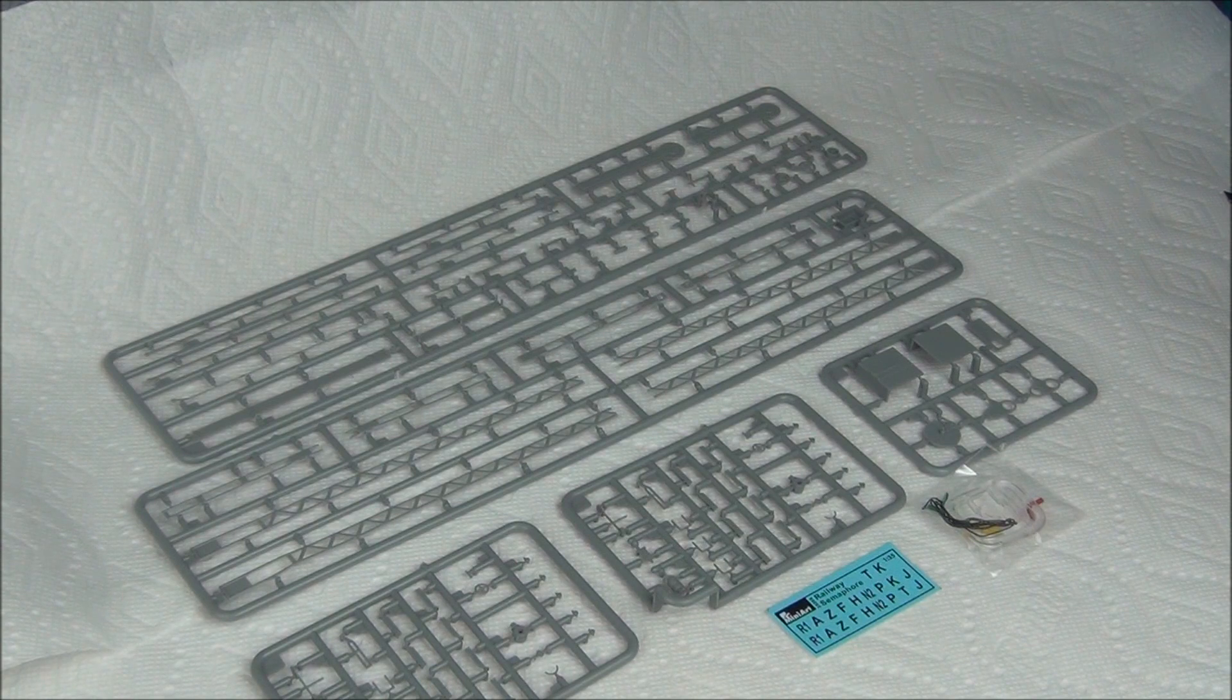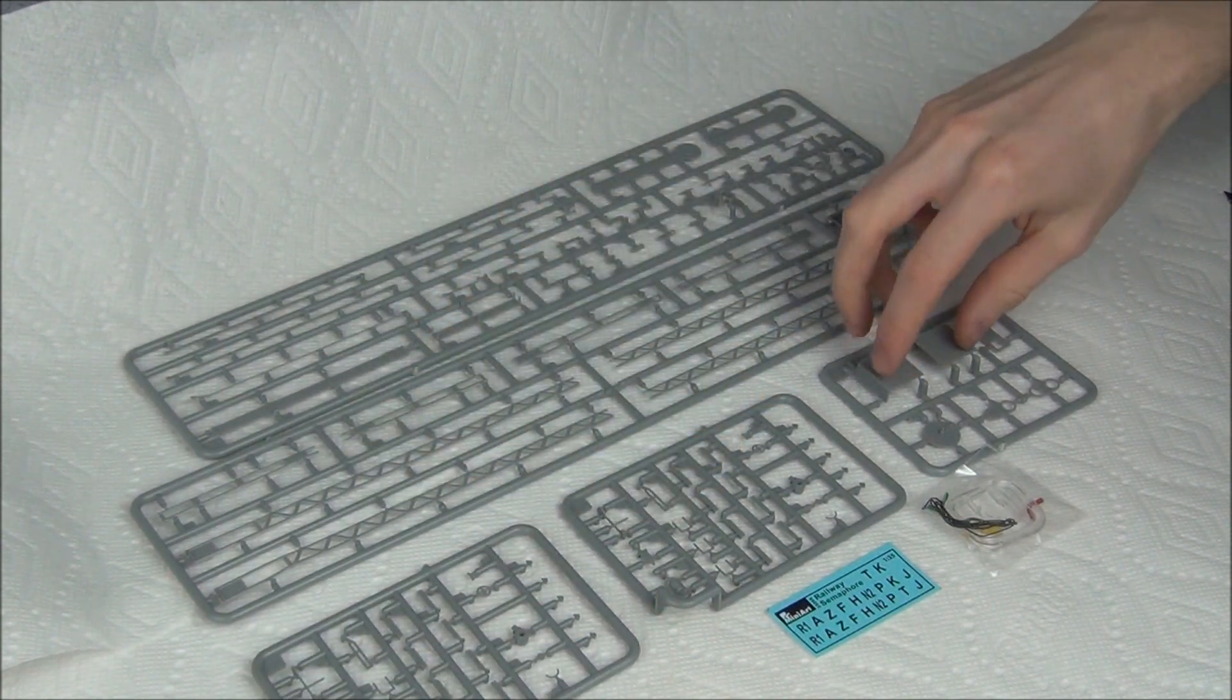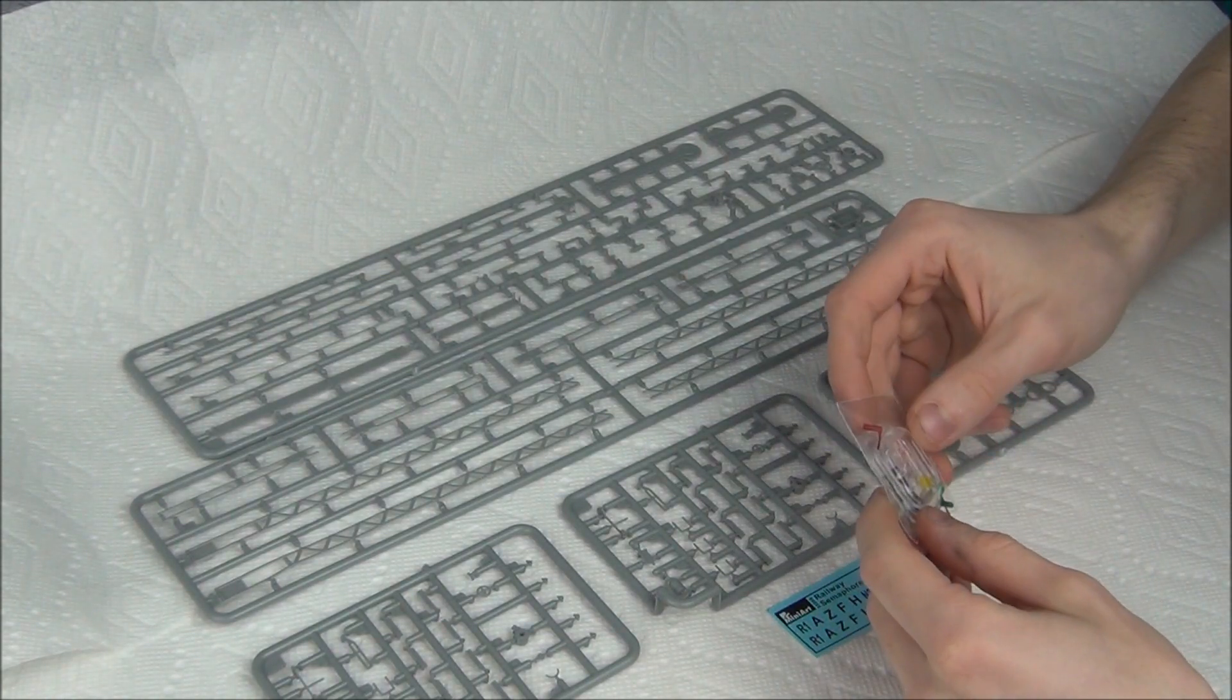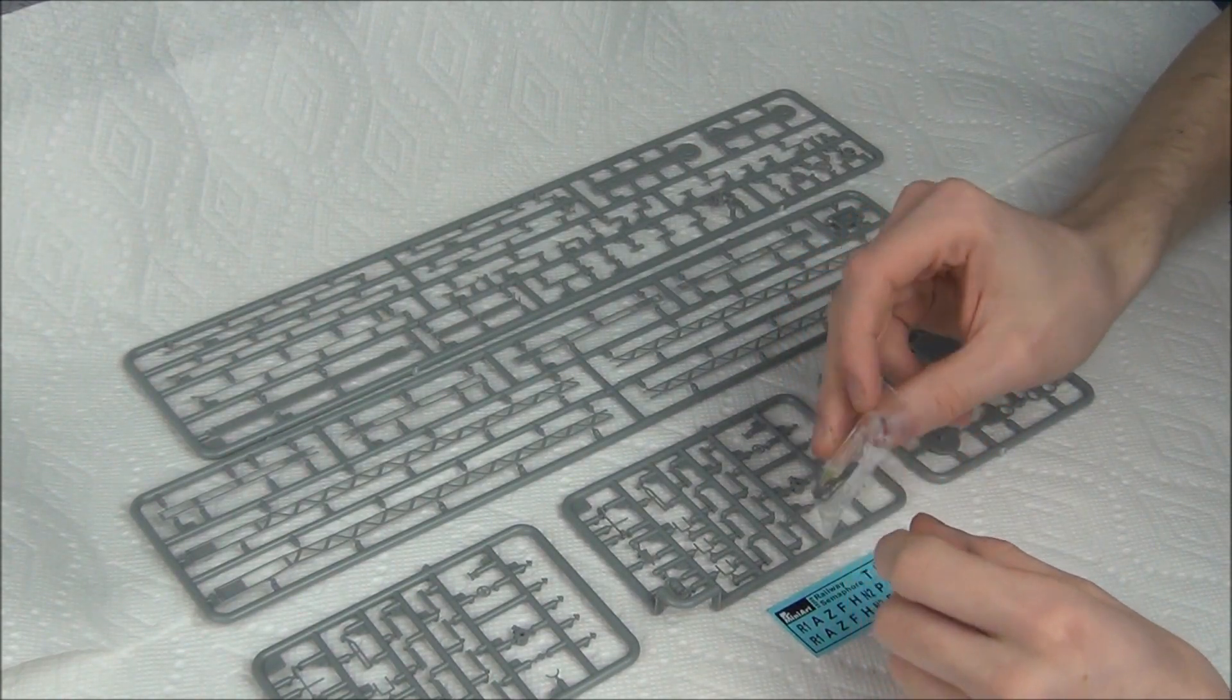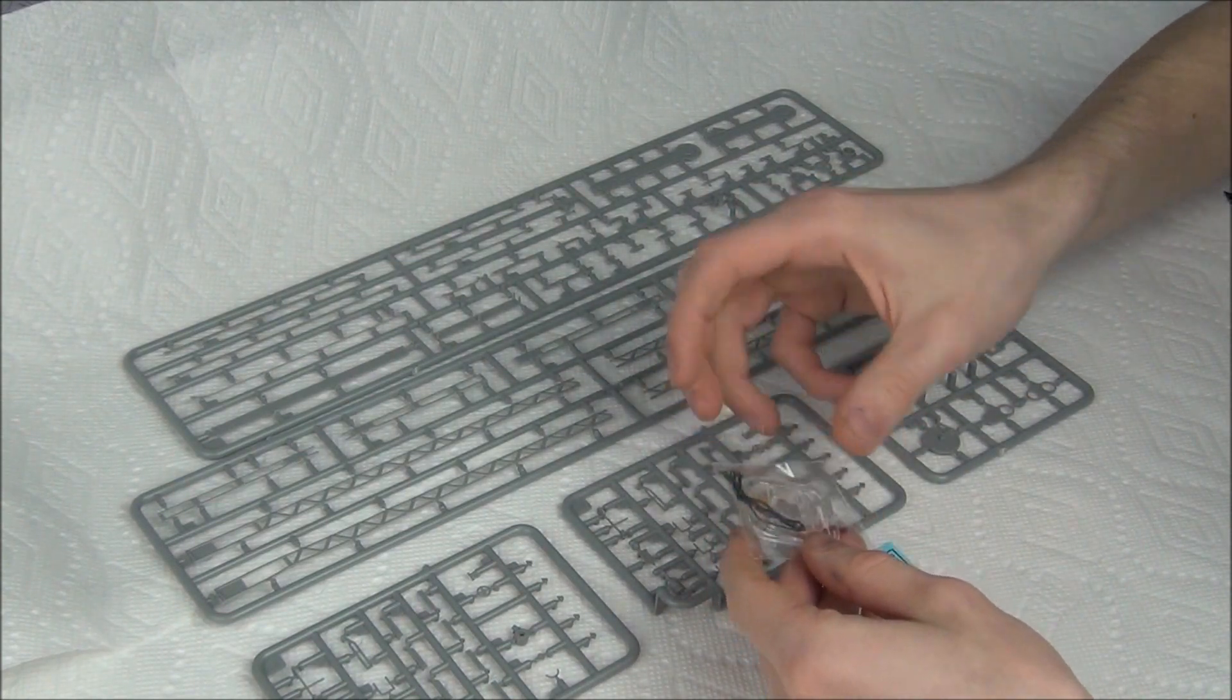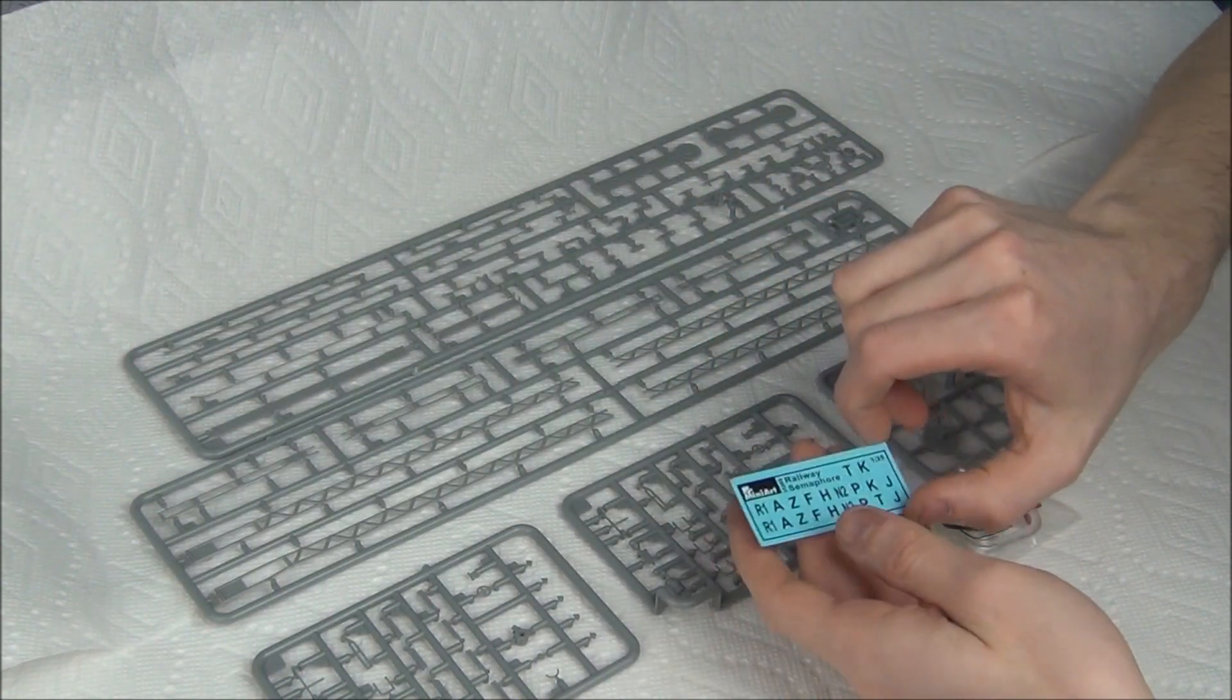This is what you get in the box. You have these two large sprues here. These two are the same type of sprue. Then this one here has the cable box at the bottom. The plastic bag also contains some more clear parts. You have a red, yellow, and green clear part which are molded in colored clear plastic. You also have a string in there which you need for the internal mechanism, and some decals.